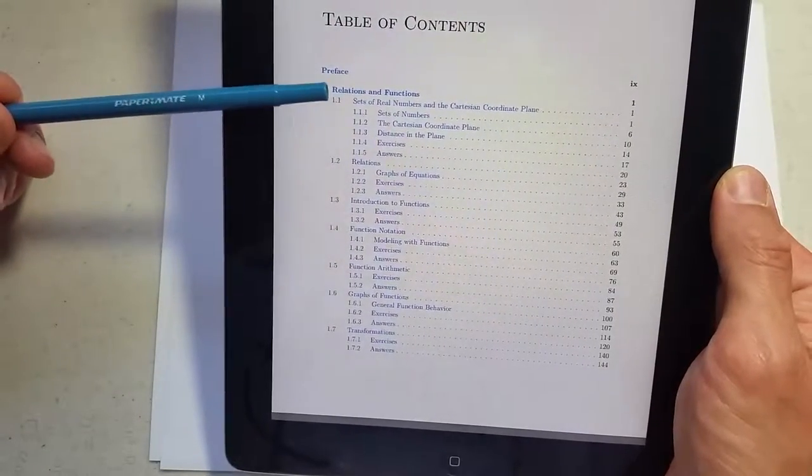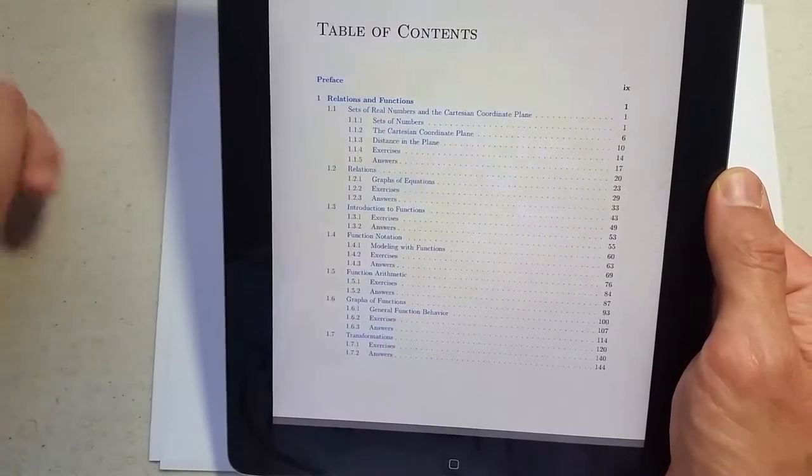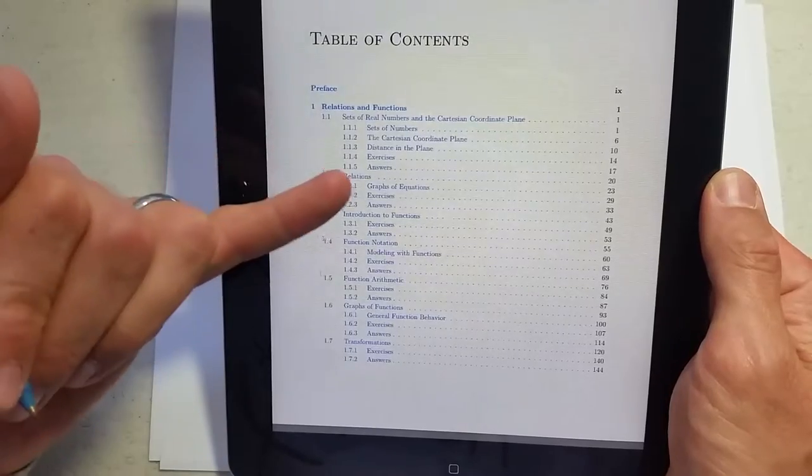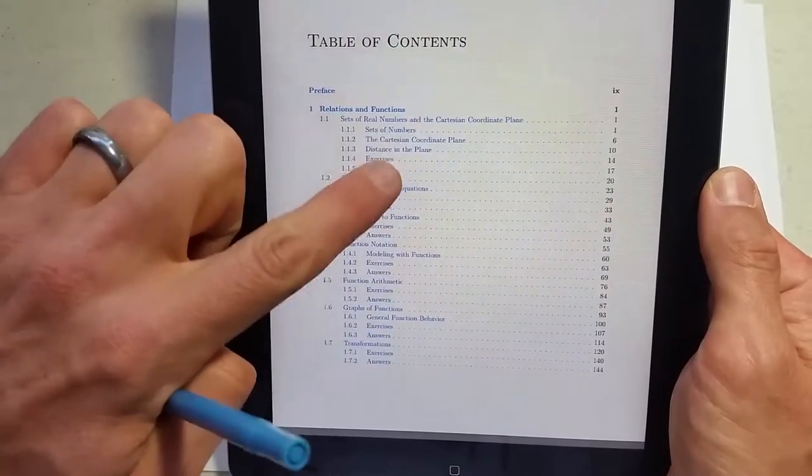We're going to start with 1.1, sets of real numbers and the Cartesian coordinate plane. Now it breaks it down into different parts of this section. I'm going to go through and lecture on each part, and then exercises.